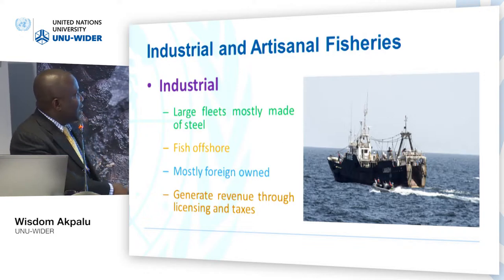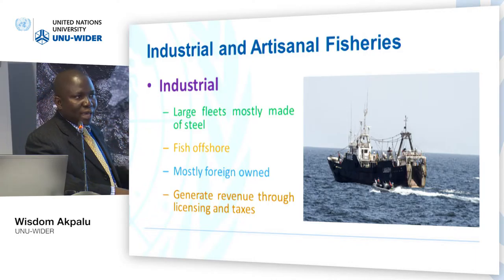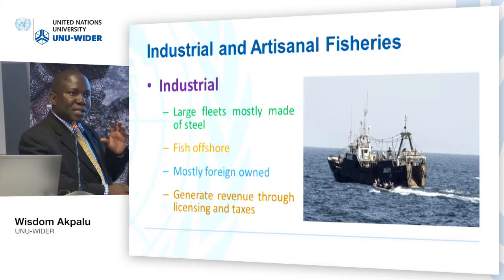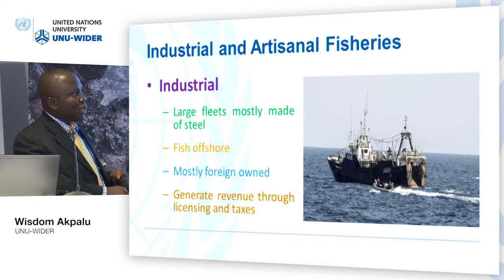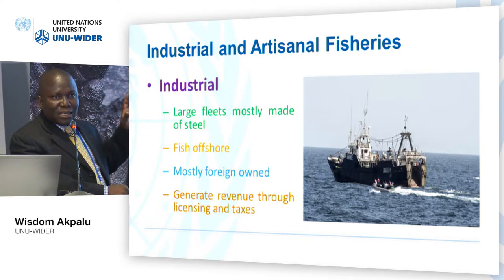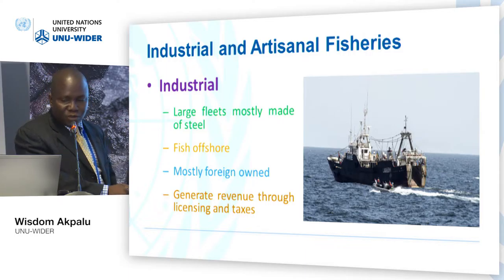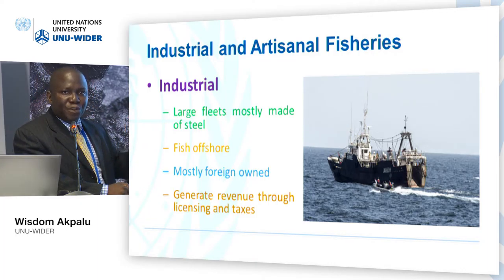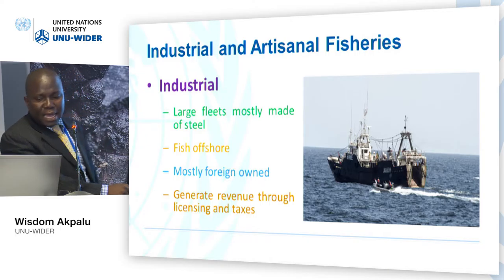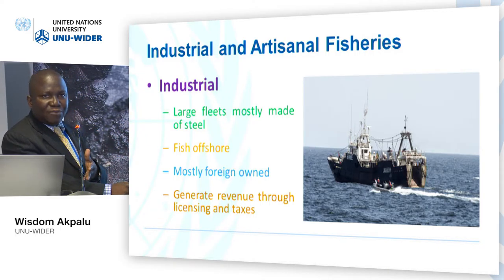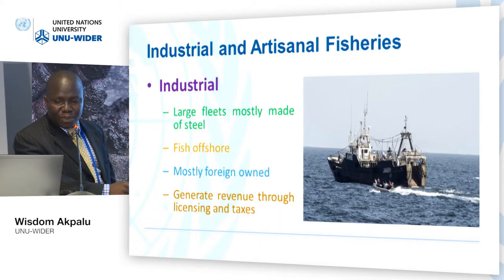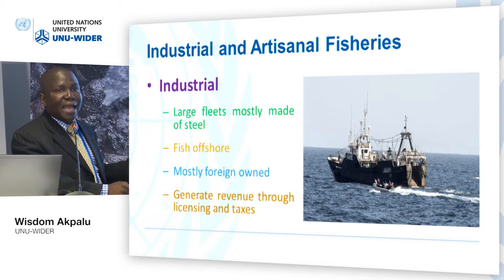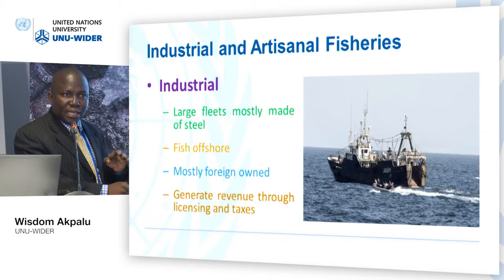Looking at fisheries in Ghana and elsewhere in sub-Saharan Africa, we have two main classifications. We have industrial fishing — usually large fleets, mostly steel, big boats — that are supposed to fish offshore. In Ghana, for instance, they are supposed to fish in areas at least 30 meters deep, but they do not. What the coastal countries get from these fleets is revenue from taxes and licenses, which constitutes about $0.4 billion a year.